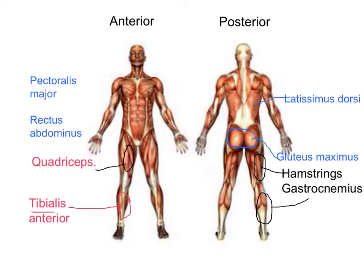On the front of the body we've got the abdominal muscles. We know them as the rectus abdominis — these are this group of muscles here. And then we have the pectoralis major, which is on the front of our chest.